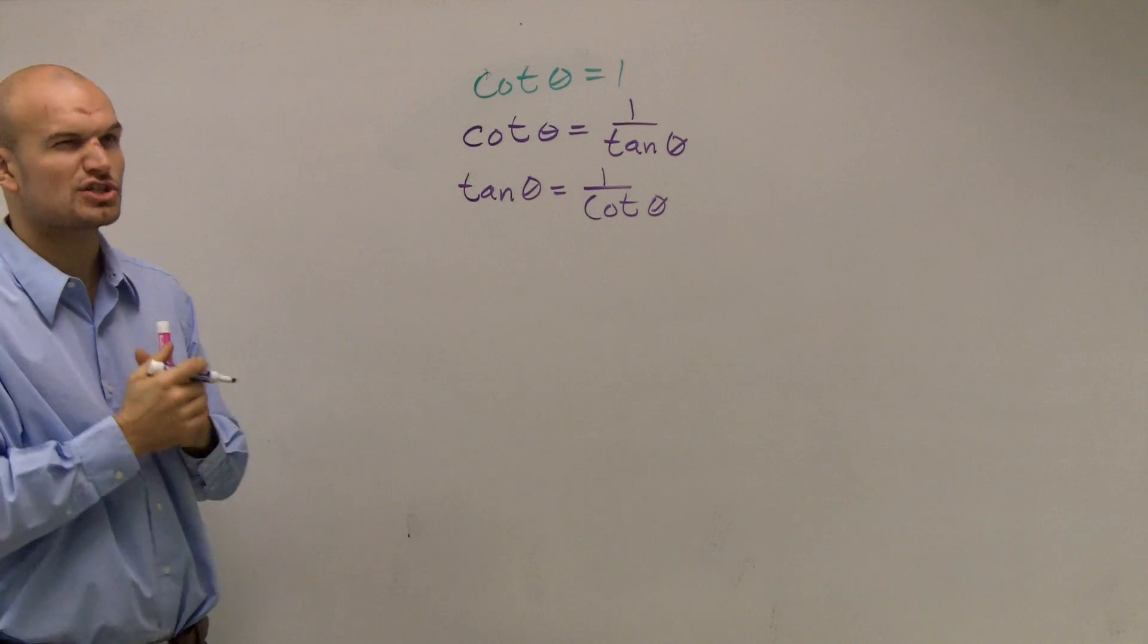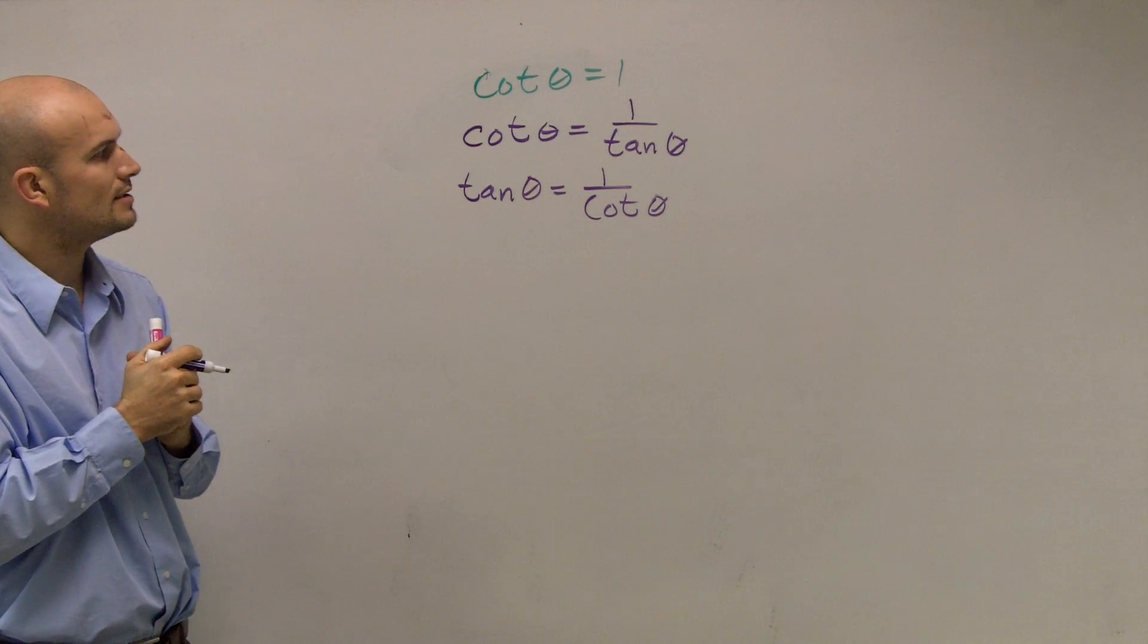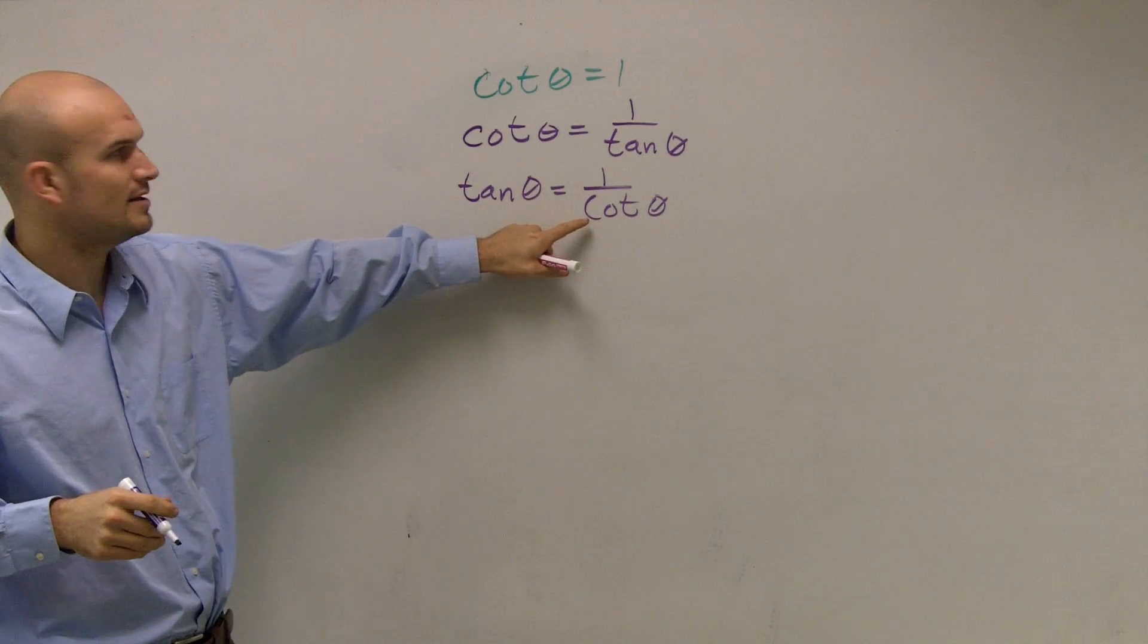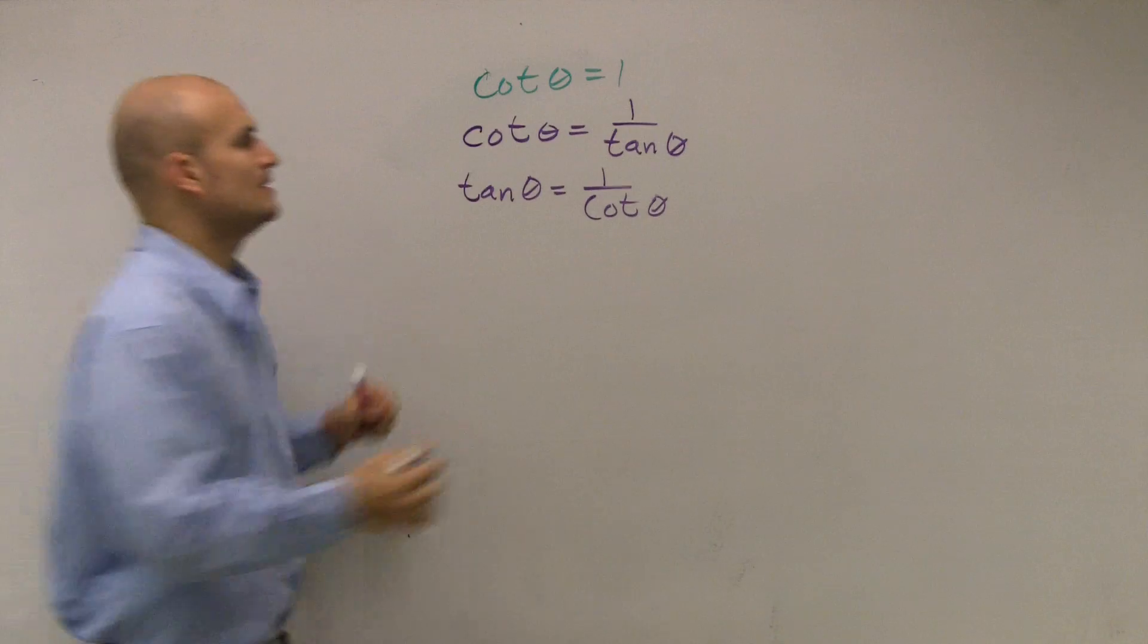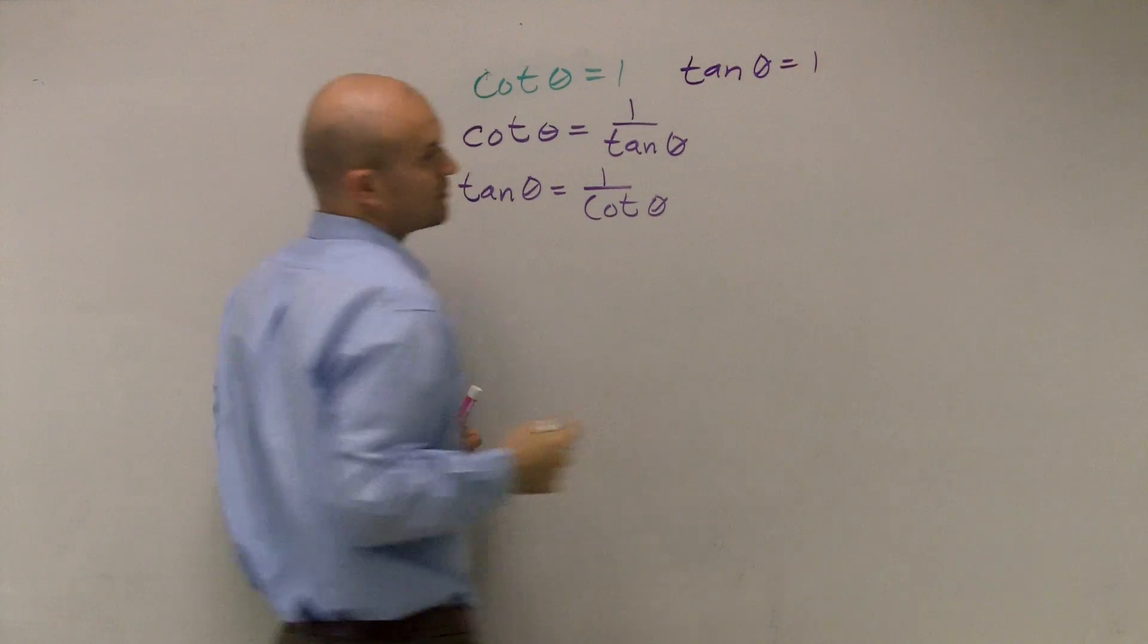Now, if I'm looking at tangent, I know cotangent is 1. Therefore, the cotangent of 1 that means the tangent of beta is also equal to 1.